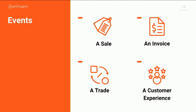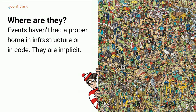If you think about where events have been, they haven't really had a proper home in infrastructure. They've been implicit — kind of hidden. If you look in your code, there wasn't really a lot of events. If you look in data infrastructure, there's no real representation of this concept. What we've had is databases and programming languages and RPC layers, but we haven't really had events anywhere in our stack.